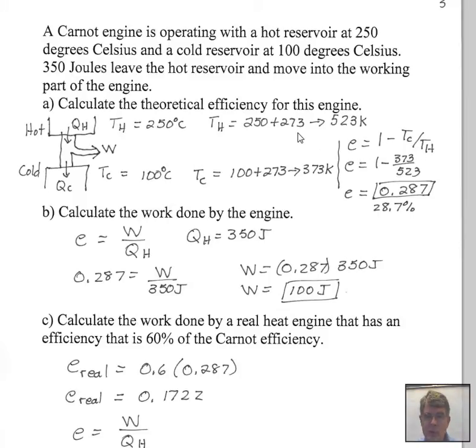So our first task is to find the Kelvin temperature. It's easy. I'm just rounding off a little bit here, but add 273 to the Celsius number. That produces the Kelvin number. So the hot reservoir has a temperature of 523 Kelvin. The cold reservoir, 100 plus 273, is at 373 Kelvin. I can now use my formula for efficiency for the Carnot engine. I have Kelvin temperatures. We substitute those in. You ought to check with your calculator. I came up with 0.287 or 28.7 percent.